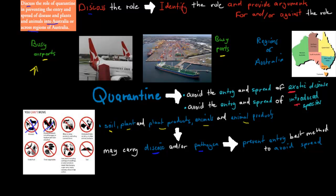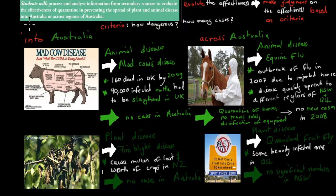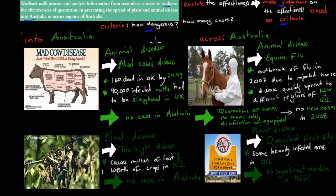The next dot point talks about the effectiveness of some of these — to evaluate the effectiveness of quarantine in preventing the spread of plant and animal diseases into Australia and across regions of Australia. 'Evaluate the effectiveness' means we need to make a judgment on the effectiveness based on criteria. So we need to base our judgment on facts — for example, how dangerous is that disease in other parts of the world versus in Australia, and how many cases are there globally versus in Australia.